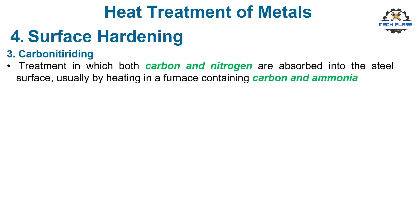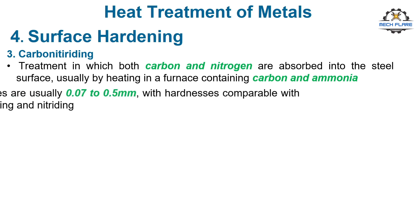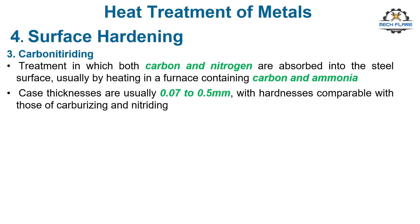Carbonitriding is a treatment in which both carbon and nitrogen are absorbed into the steel surface, usually by heating in a furnace containing carbon and ammonia. Case thicknesses are usually 0.07 to 0.5 mm, with hardnesses comparable with those of the other two treatments.